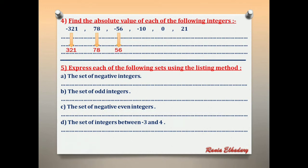Absolute of 0 — 0 is neither positive nor negative — the answer is 0. Absolute of 21 = 21.